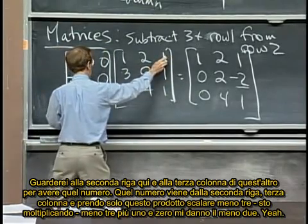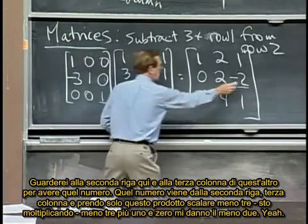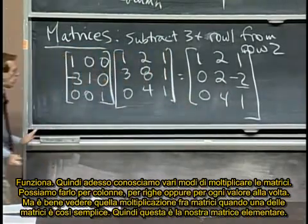That number comes from the second row and the third column, and I just take this dot product minus three, I'm multiplying, minus three plus one and zero gives the minus two. Yeah, it works.